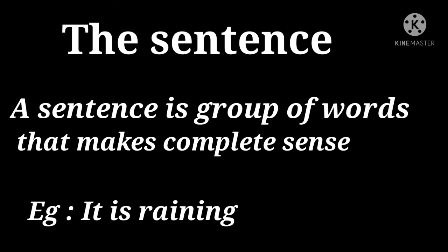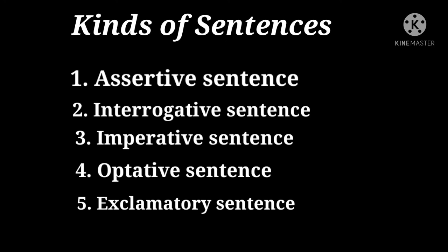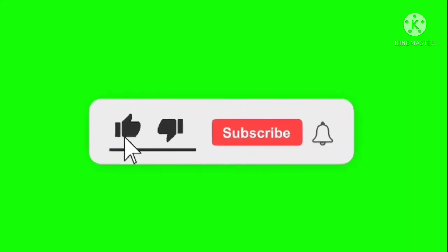You also need to remember that a sentence always begins with a capital letter and ends with a full stop. There are five types of sentences in English grammar: the assertive sentence, the interrogative sentence, the imperative sentence, the optative sentence, and the exclamatory sentence. The interrogative sentence ends with a question mark and the exclamatory sentence ends with an exclamation mark.